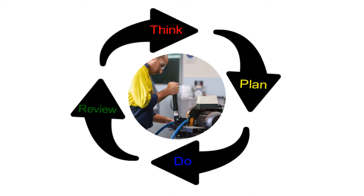Think, plan, do, review — it's our work smart method. Think: what am I doing? Plan: what do I need, and in what order will I be performing the tasks? Do: execute and follow my plan. Review: was I successful? Can I do anything better? Did something go wrong?